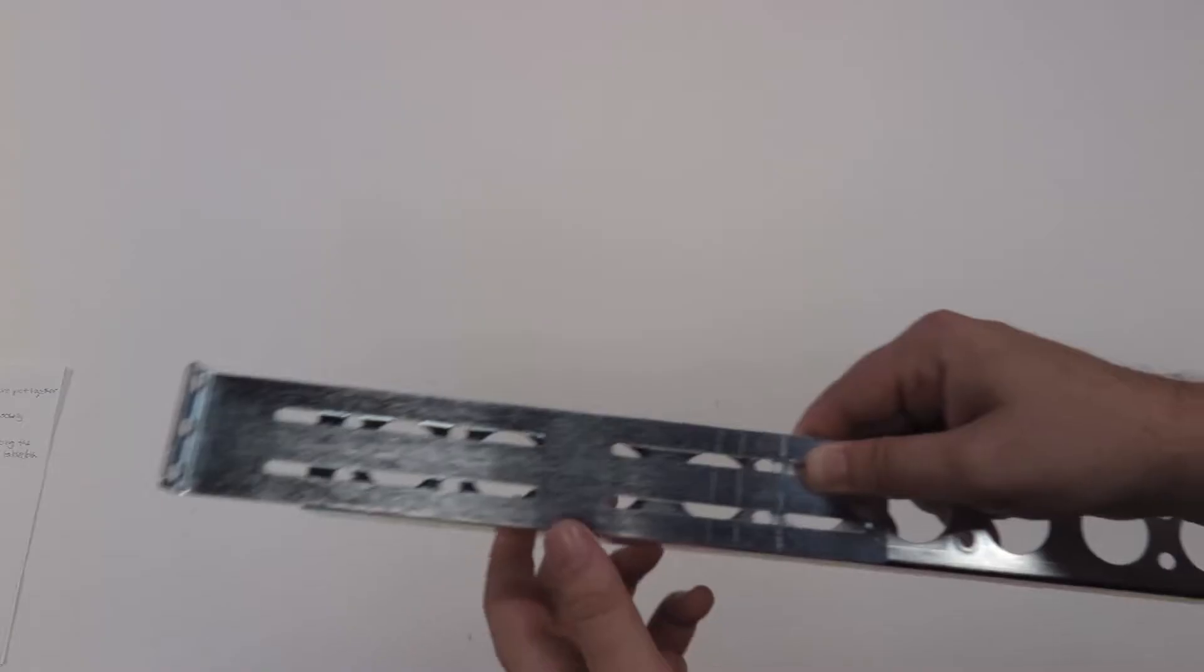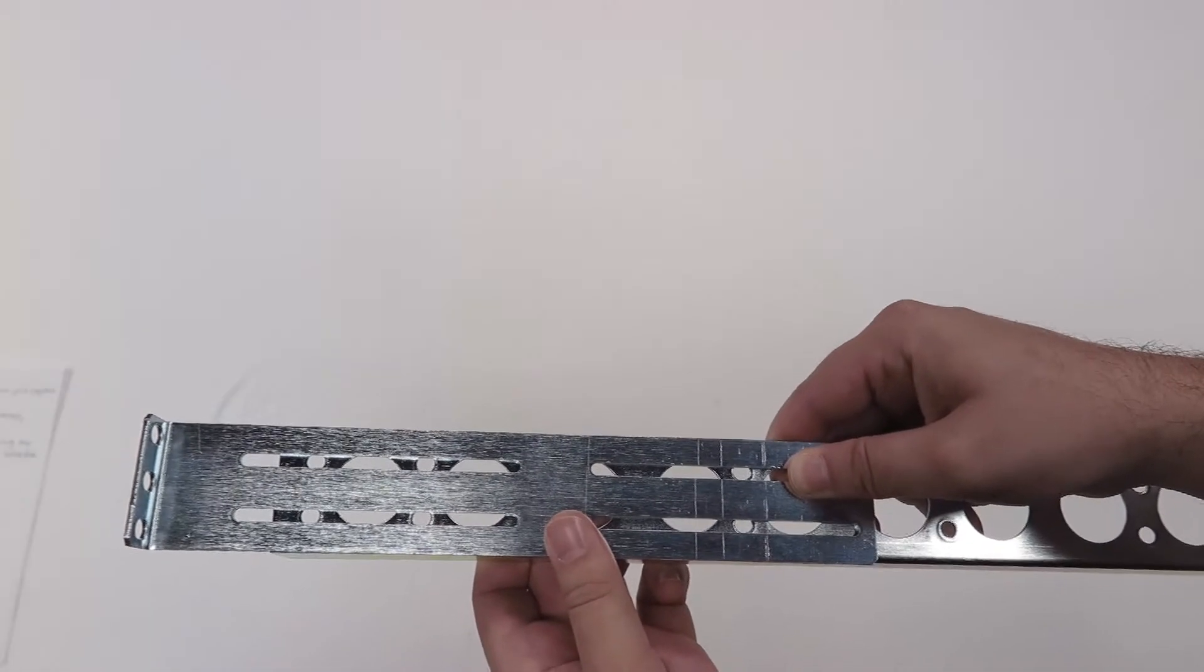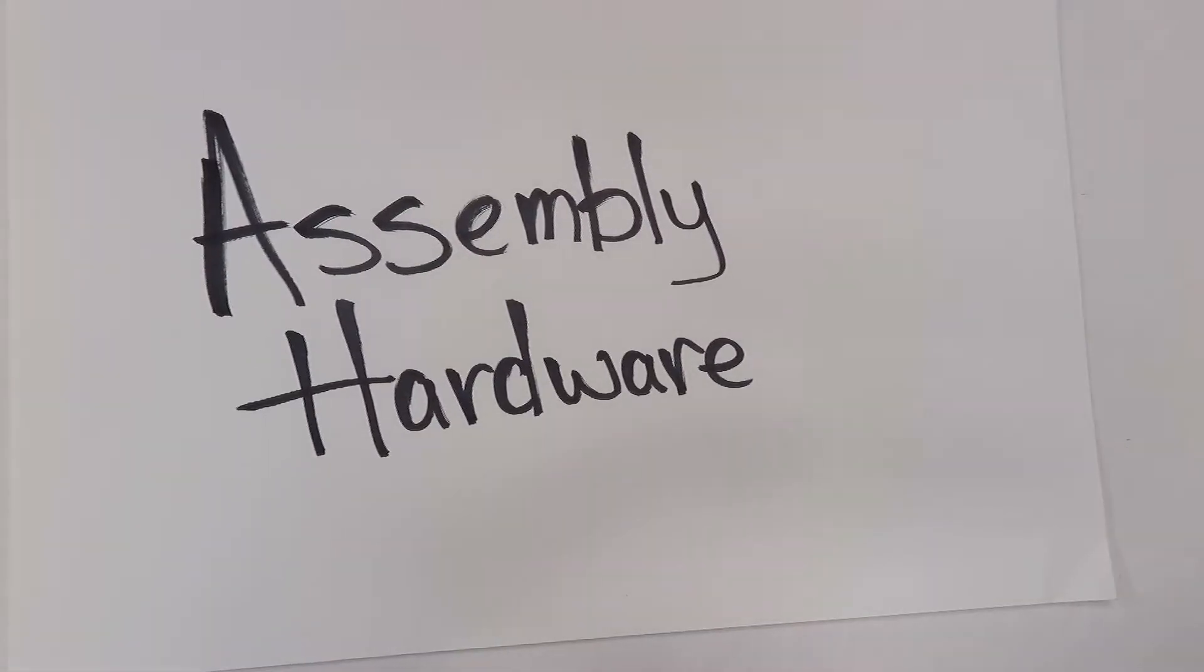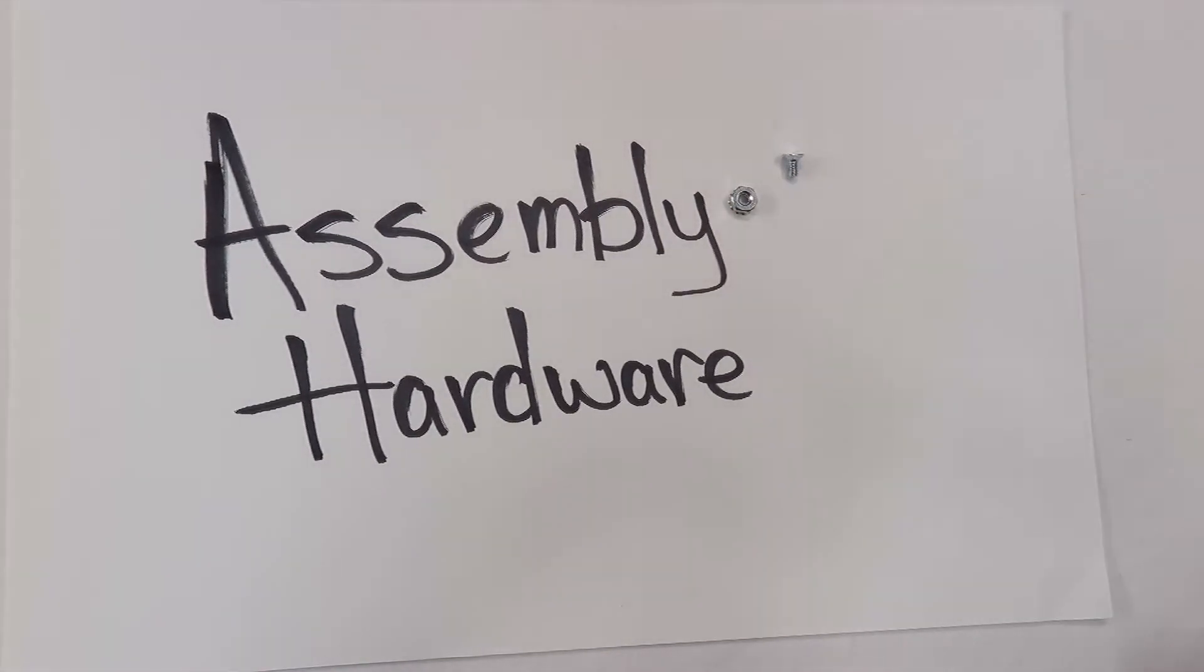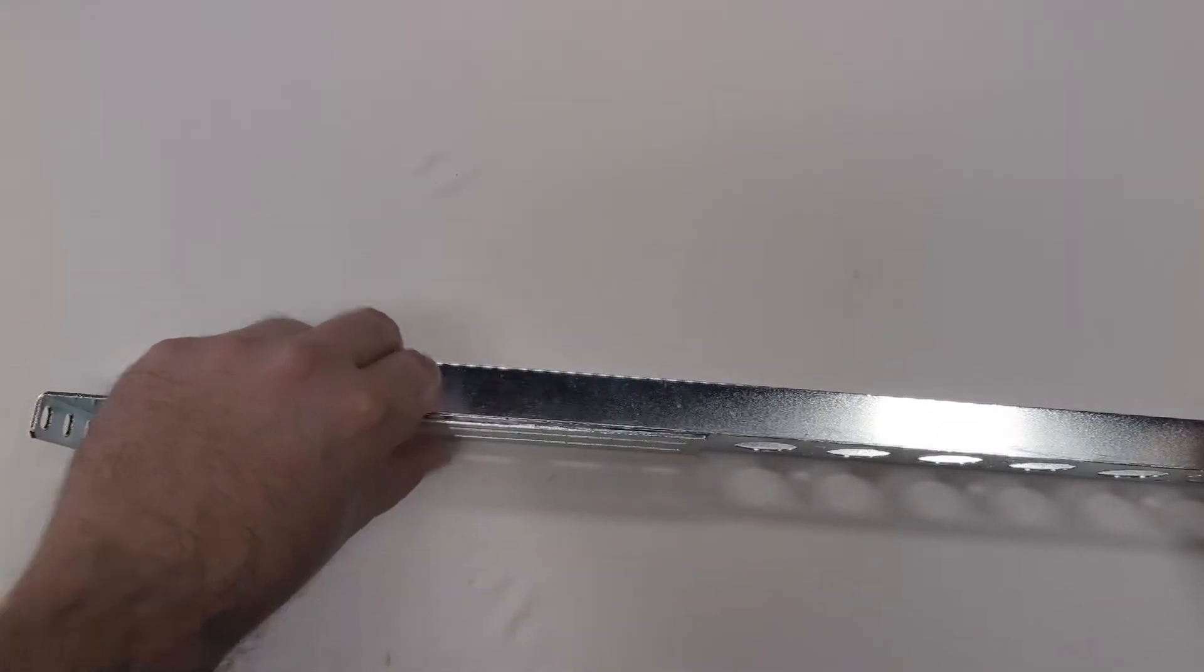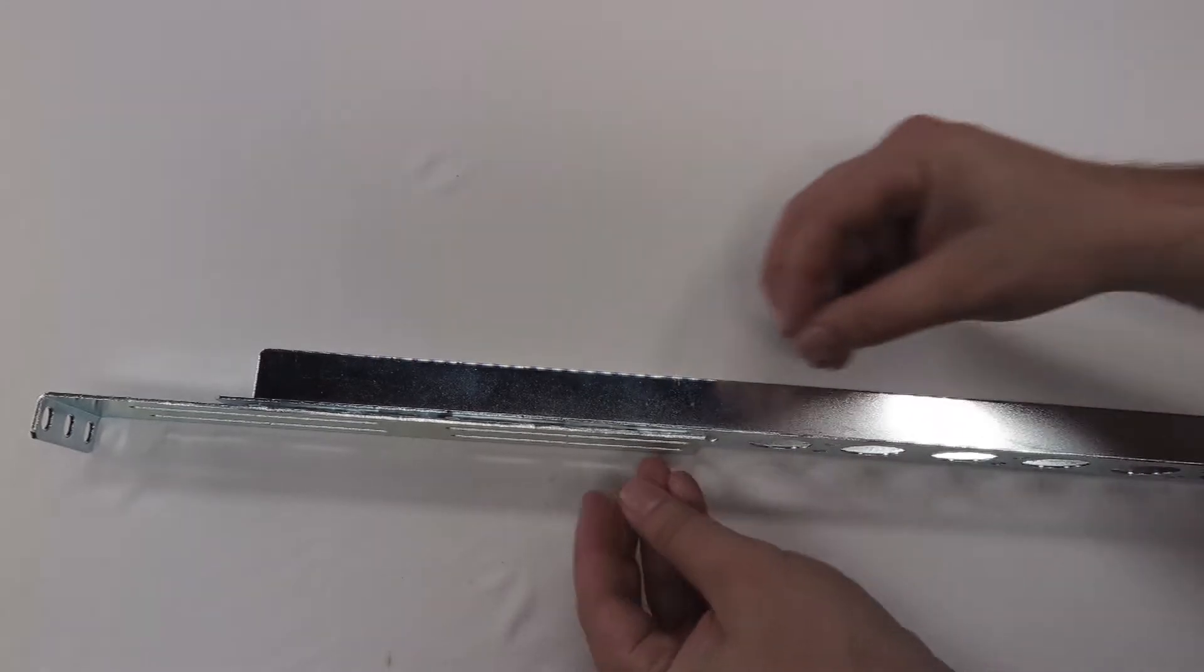This is how the rails attach. The part of the bracket that attaches to the rack is bent in the opposite direction as the lip that holds your server. Using the 832 flathead screws and 832 nuts, you can attach the rail and rear bracket. The flathead screws will enter through the rail while the nuts secure the screws from outside of the rear bracket.